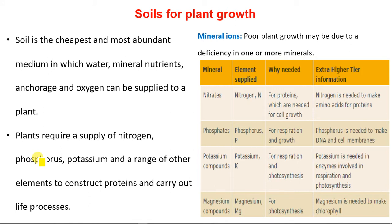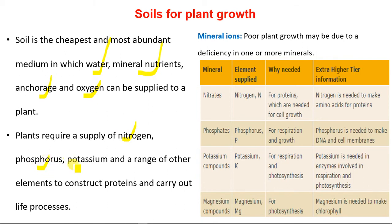Soil is the cheapest and most abundant medium in which water, mineral nutrients, anchorage and oxygen can be supplied to plants. Plants require a supply of nitrogen, phosphorus, potassium and a range of other elements to construct proteins and carry out life processes.